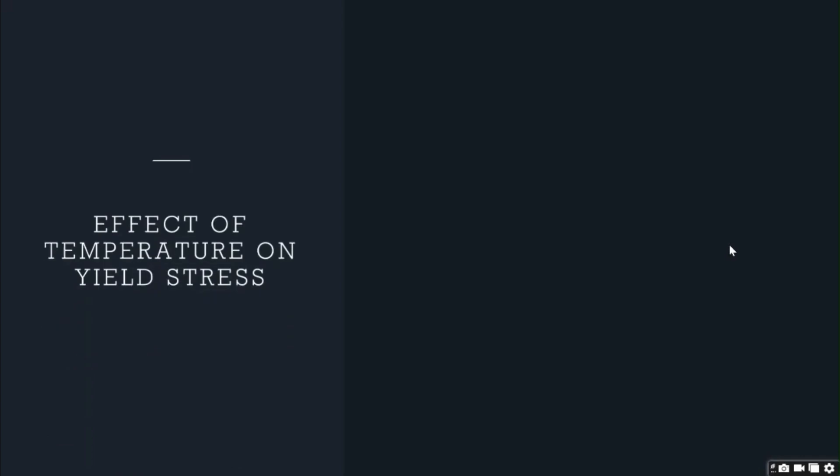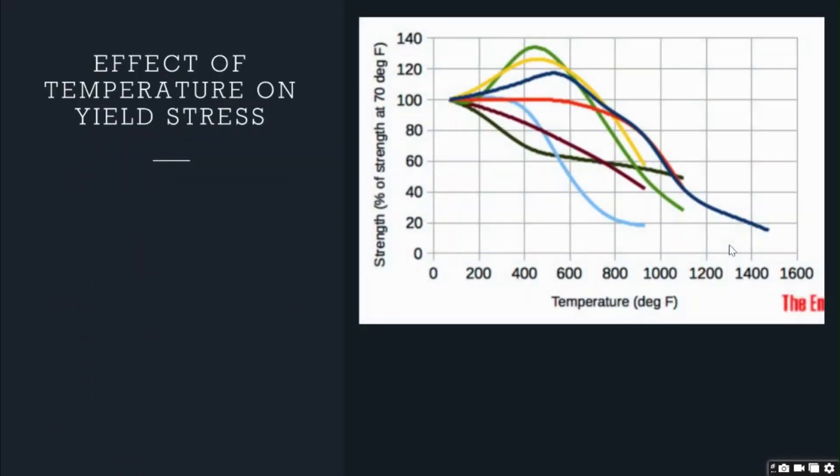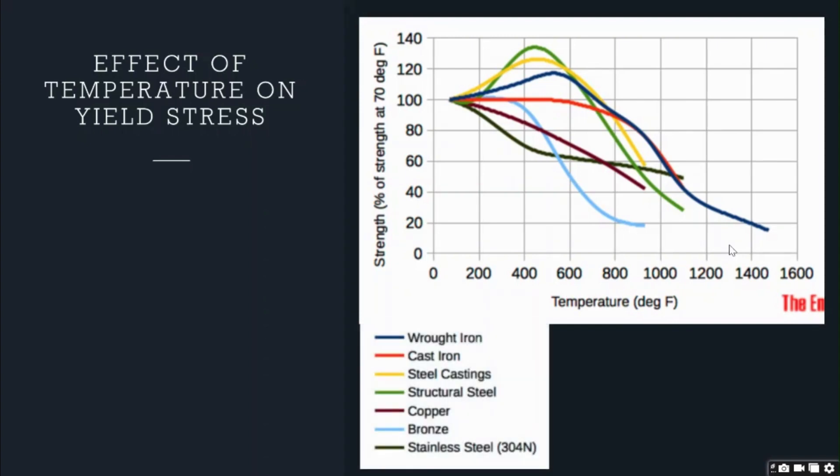Let us now look at the effect of temperature on structural steel. The graph to your right tells us the variation of yield stress of steel with respect to change in temperature. Each line represents a material. We are interested in structural steel, which is the green line. The curve starts at room temperature, where the strength is at 100%. As you can see, the yield stress initially increases with increase in temperature up to approximately 700 Fahrenheit.